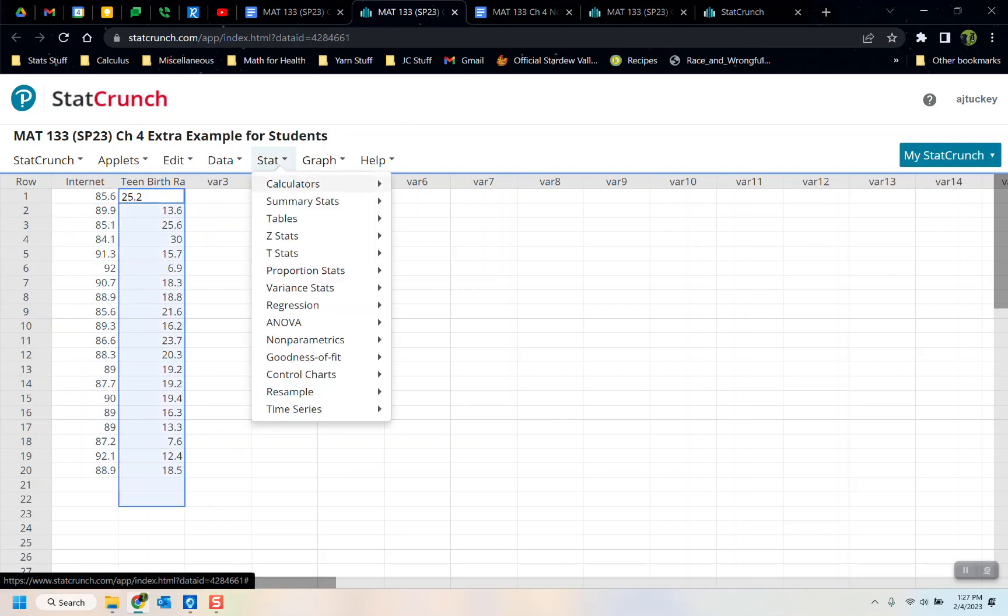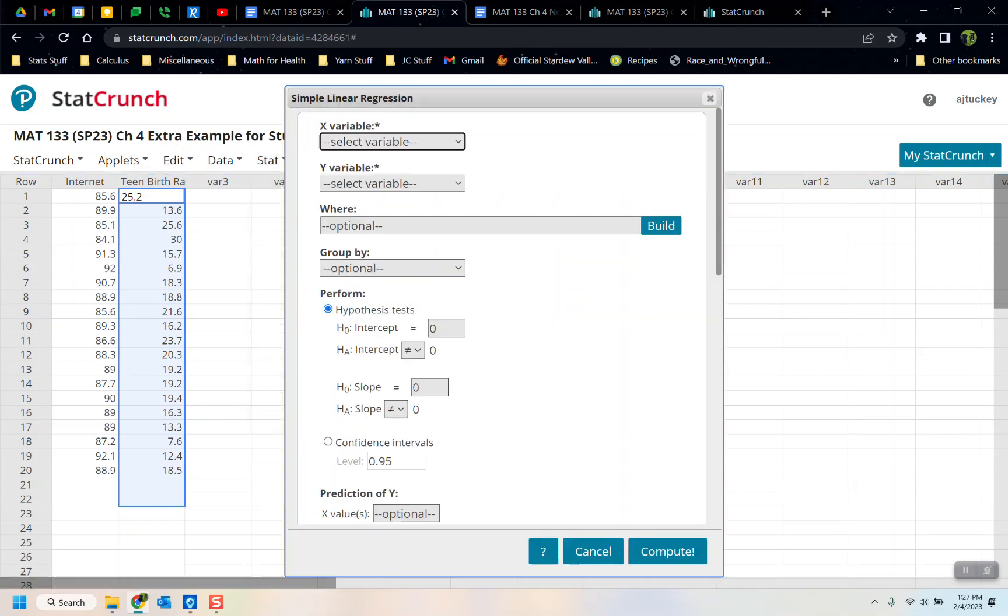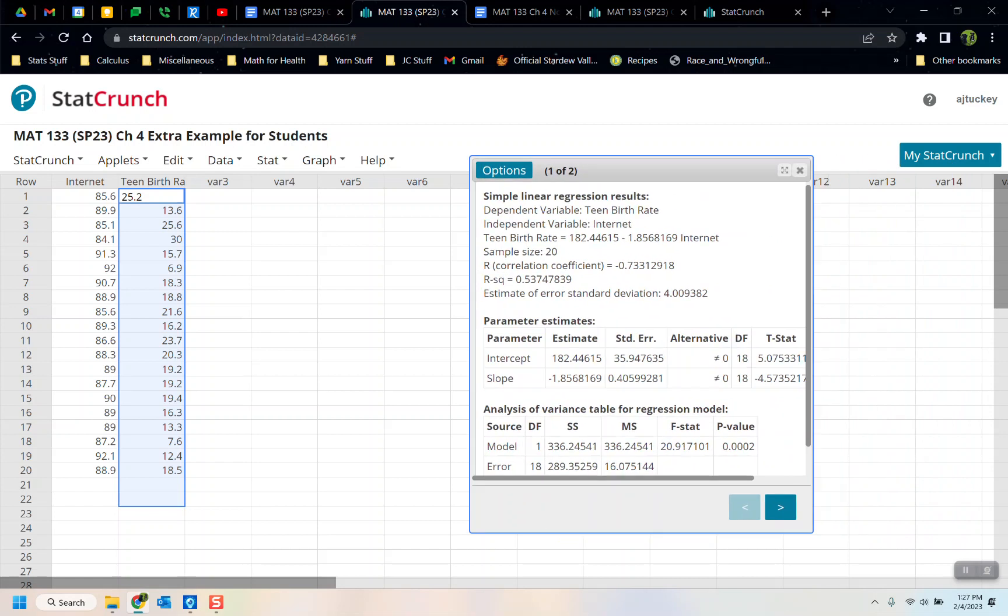We have the internet rate here and the teen birth rate here. So we're going to go to Stat, Regression, Simple Linear. The x variable is your explanatory variable, which in our case is internet access, and then teen birth rate. And then we would say Compute. And there we have it.